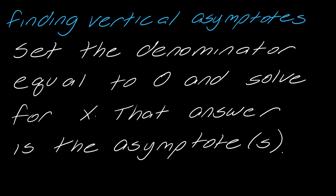Finding vertical asymptotes is actually pretty simple. All you have to do is set the denominator equal to zero and solve for x. The answer to that is going to be the asymptote or asymptotes. We'll take a look at that in a few minutes, but this part is pretty straightforward.